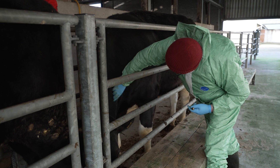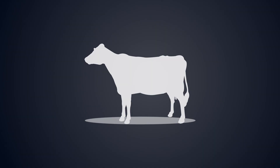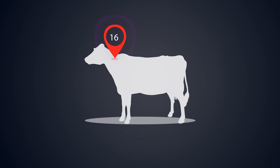Animal number 31 had first-day skin fold measurements of 9 mm at the avian injection site and 12 mm at the bovine injection site. 72 hours later, the skin fold measurement at the avian injection site is 16 mm, an increase of 7 mm, and the skin fold measurement at the bovine injection site is 20 mm, an increase of 8 mm. As the reaction at the bovine injection site is between 1 mm and 4 mm greater than the reaction at the avian injection site, and as there are no clinical signs at the bovine injection site, this animal is deemed to be inconclusive to the test.